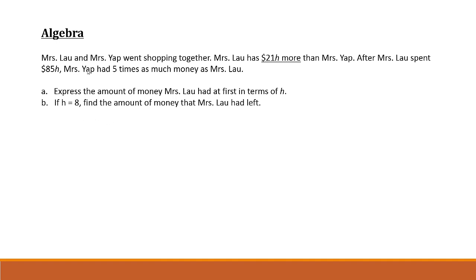Alright, so Mrs. Lao and Mrs. Yap were shopping together. Mrs. Lao had 21h dollars more than Mrs. Yap. A keyword here is 'more than' — where you see the word 'more than,' it's always good to draw a model. After Mrs. Lao spent 85h dollars, Mrs. Yap had five times as much money as Mrs. Lao. Part A: express the amount of money Mrs. Lao had at first in terms of h. Let's draw a model to represent this.